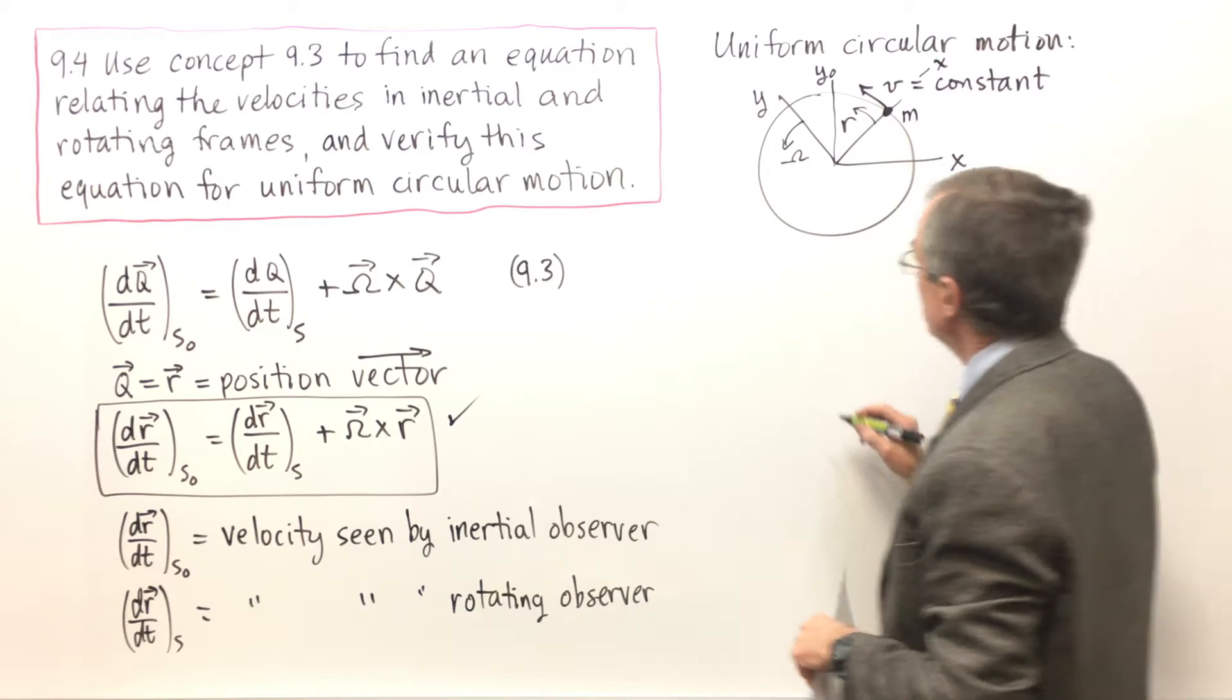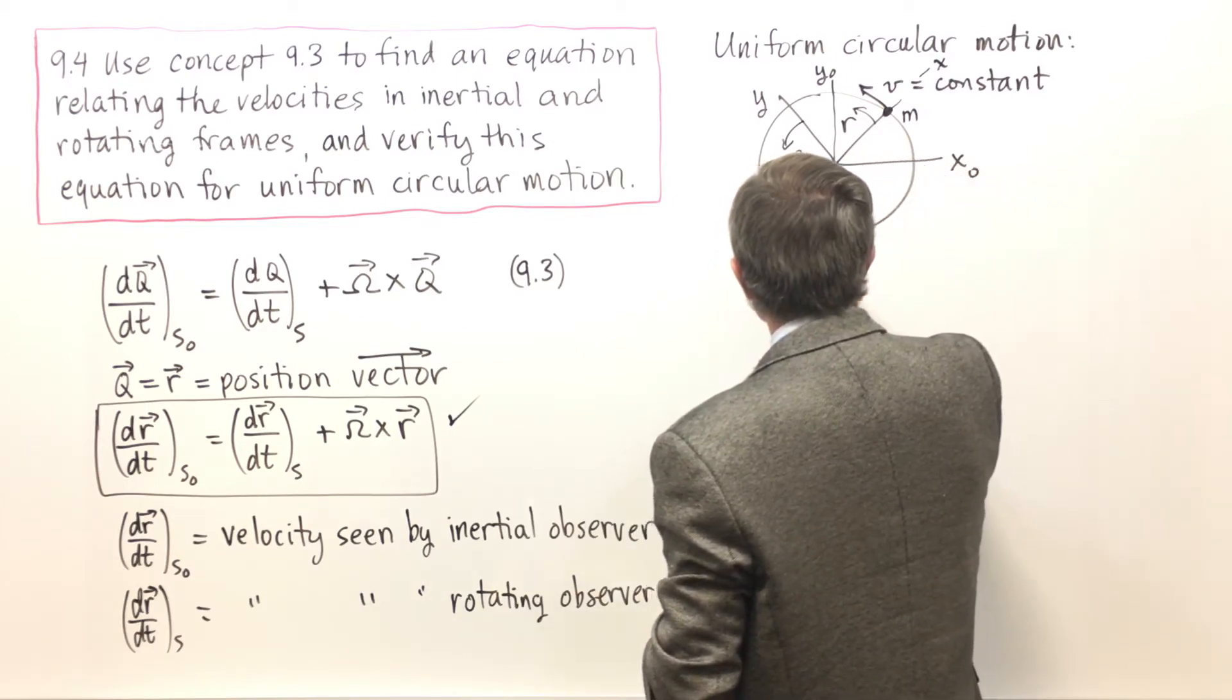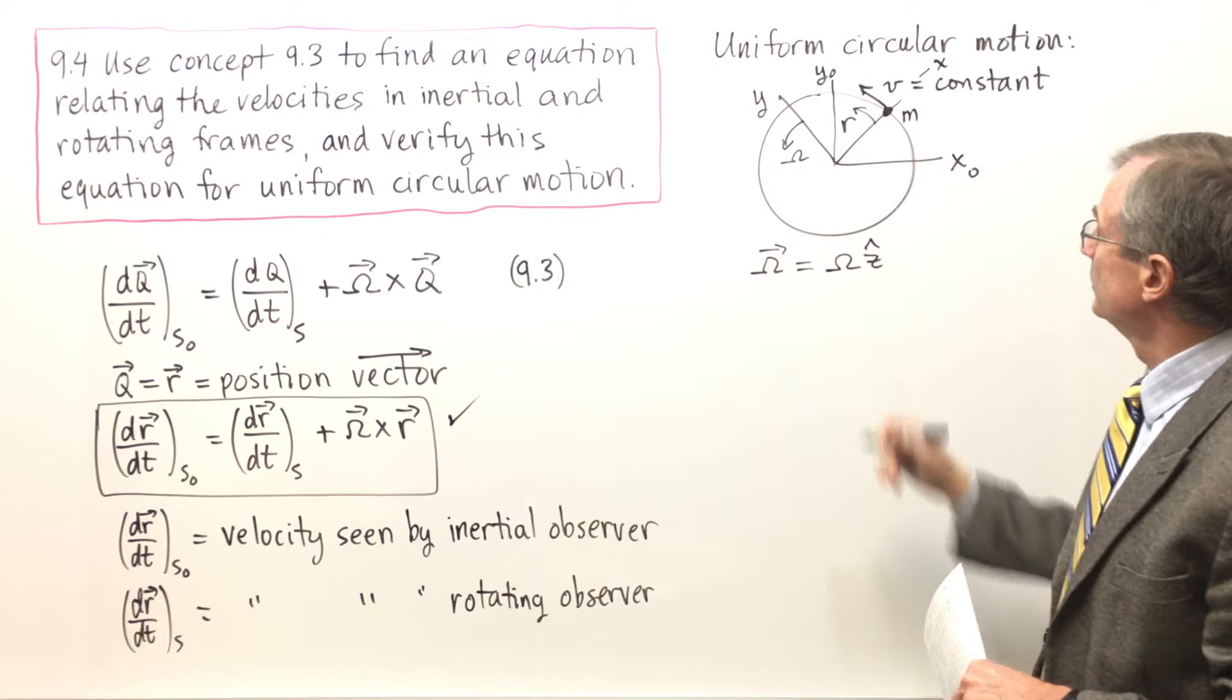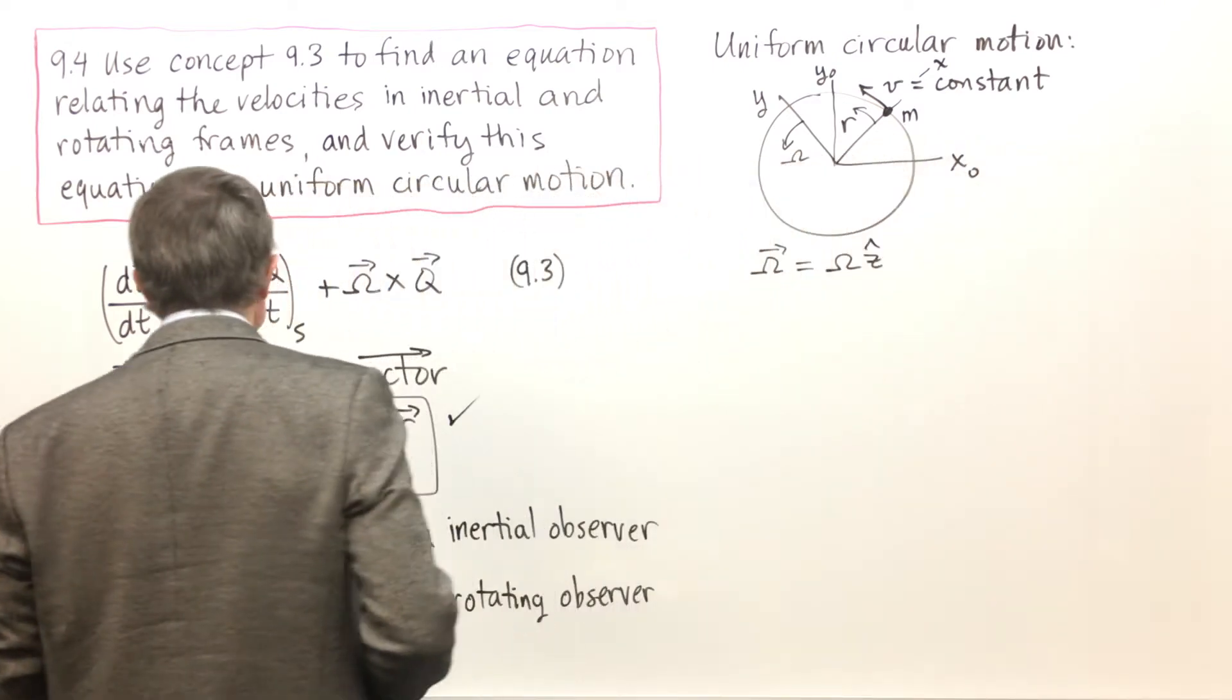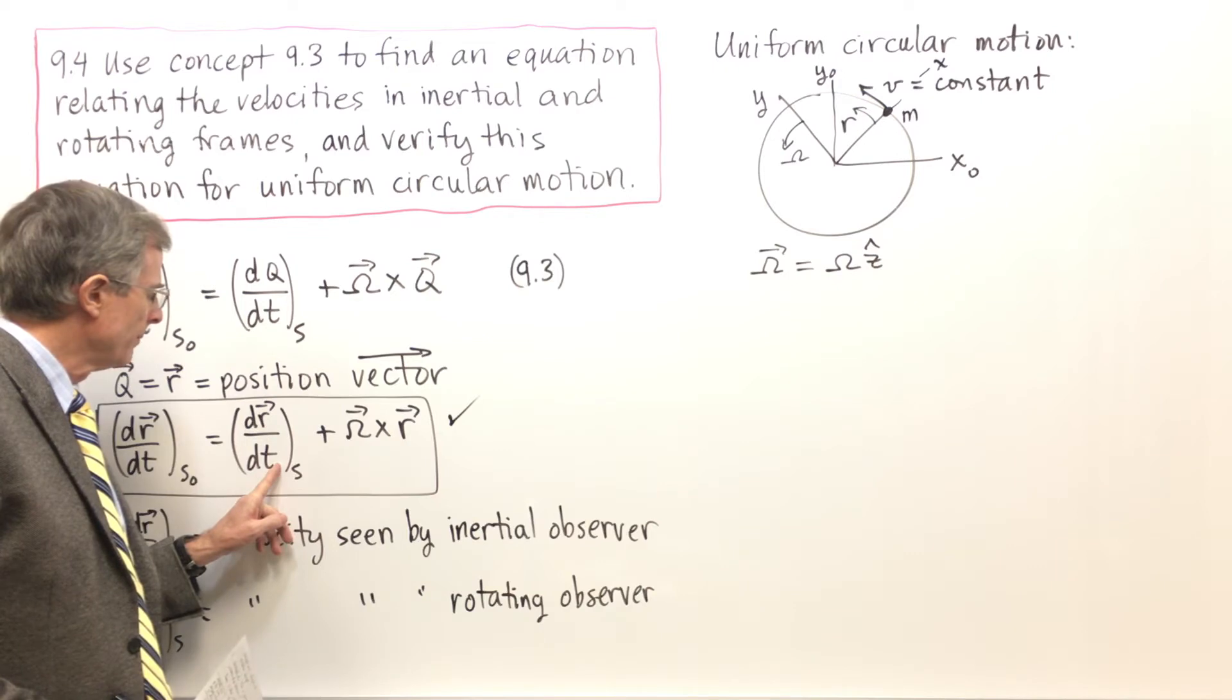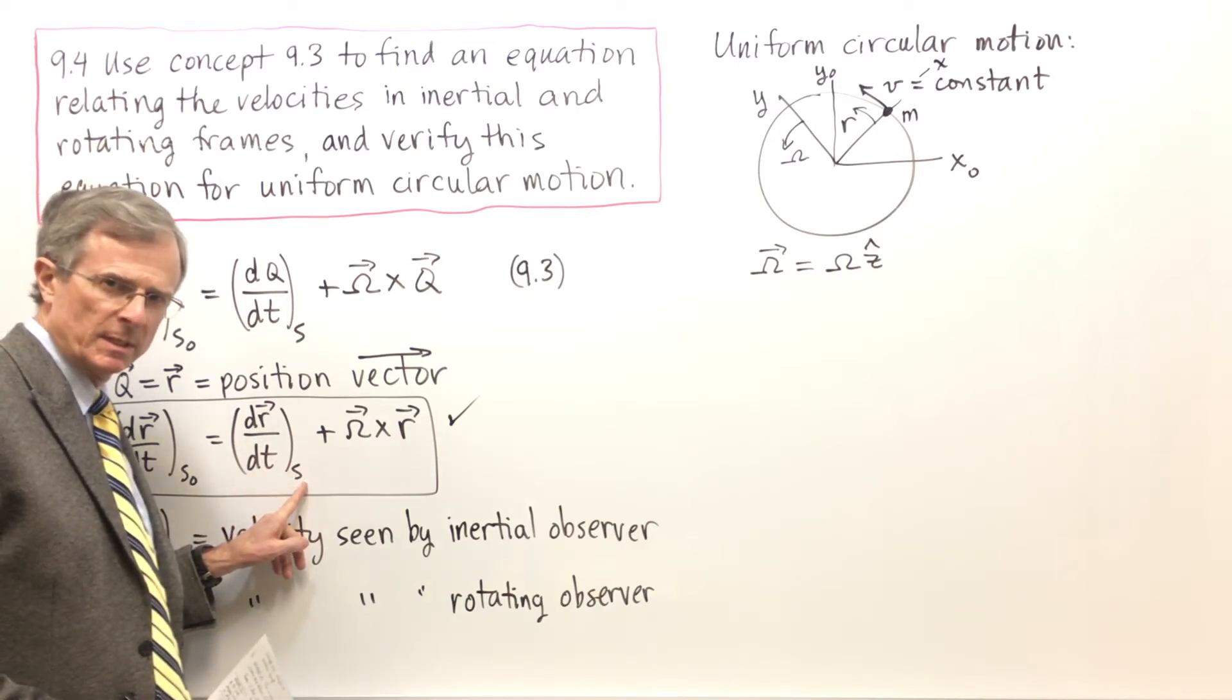So the angular velocity vector in this case is in the z hat direction. All right, let's try and apply this equation now. The first thing to consider is dR/dt as seen by the rotating observer.